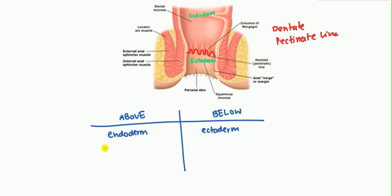The type of cells are different: above the pectinate line you have columnar cells, and below the pectinate line you have squamous cells. This also links into cancer pathology — above the pectinate line you generally get adenocarcinomas, and below the pectinate line you get squamous carcinomas, simply because of the histology.